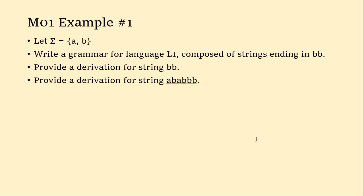All strings composed of A and B — we don't care what comes before as long as it ends in BB. As you think about how to create a grammar, start with the shortest possible string, which is BB. You need a rule that gets from the start state to BB. Then think about the next longest strings: ABB, BBB, then strings of length four — AABB, ABBB, BABB, BBBB, and so on. Think of all the combinations and make rules that handle them. That's the process by which you create these grammars.